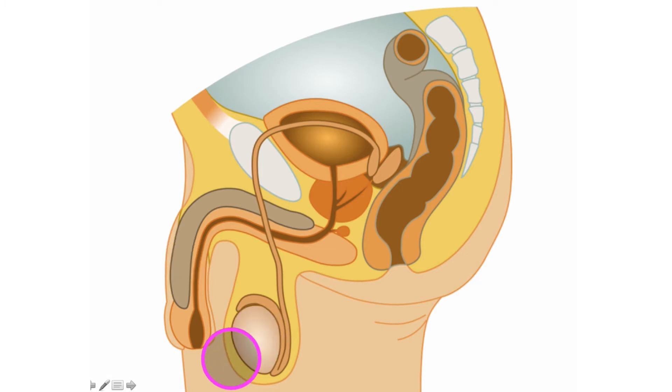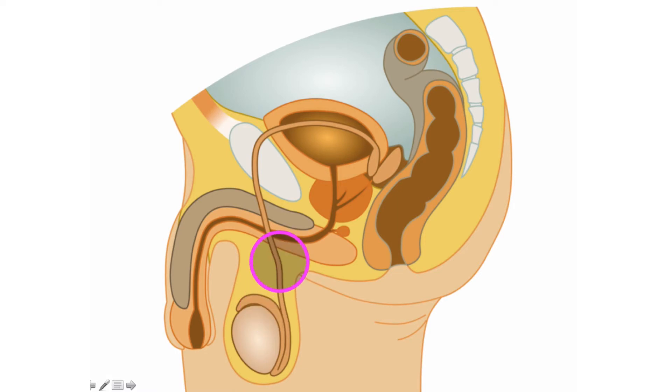Here is a testis, scrotum, epididymis, and vas deferens, or ductus deferens. We've looked at all of that in previous videos.